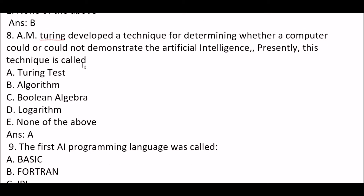Next question: A.M. Turing developed a technique for determining whether a computer could or could not demonstrate artificial intelligence. Presently, this technique is called — Option A: Turing test. Option B: algorithm. Option C: Boolean algebra. Option D: logarithm. Option E: none of the above. The right answer is Option A — Turing test. This is a very important question.